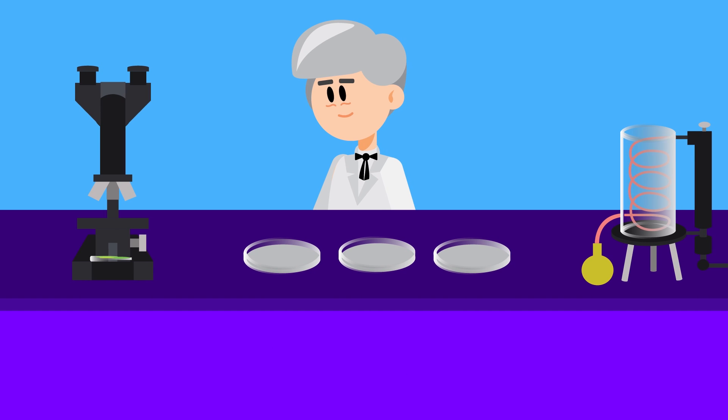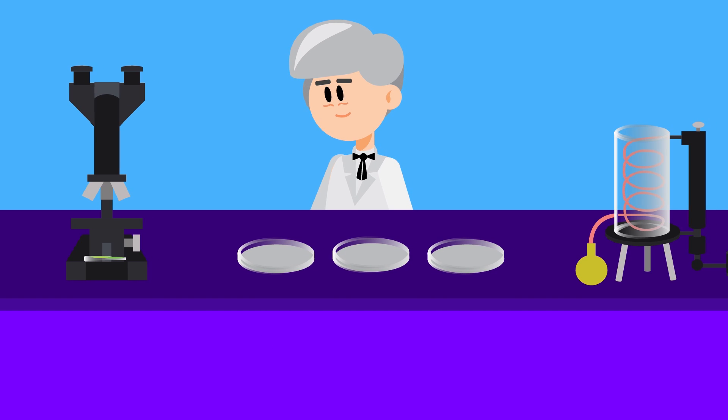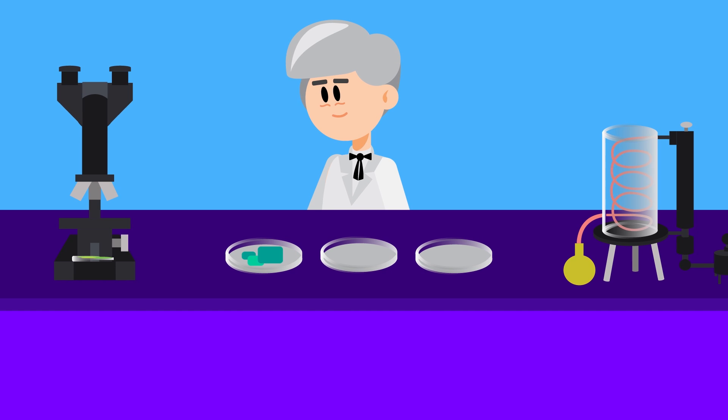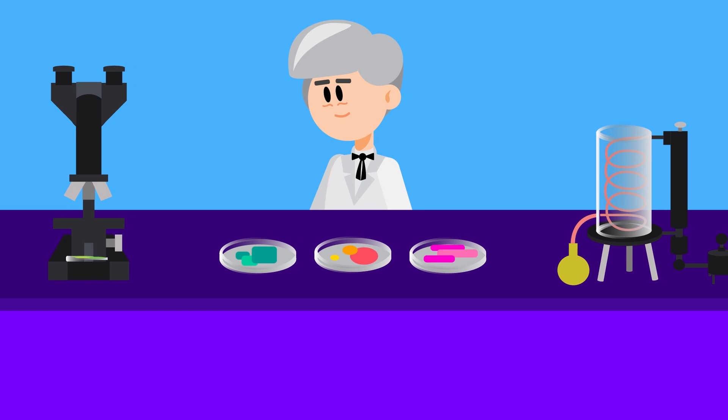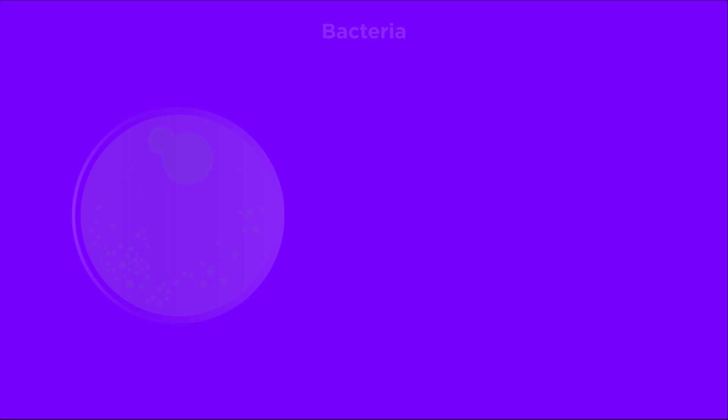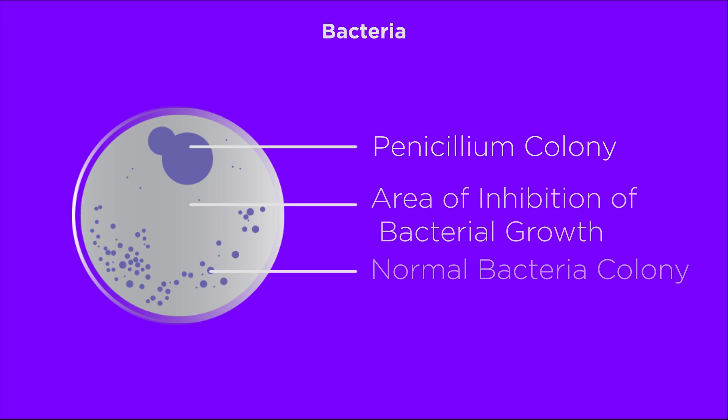One day after studying influenza, he noticed that mold had accidentally developed on a set of petri dishes being used to grow the bacteria called Staphylococcus. The mold had created a bacteria-free circle around itself. The mold was the fungus Penicillium notatum. Fleming concluded that the bacteria on the plate had been killed off by a substance in the mold.